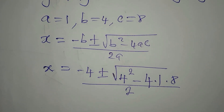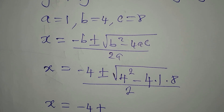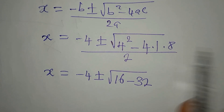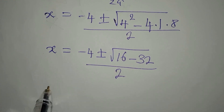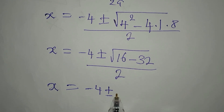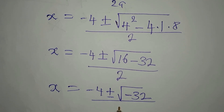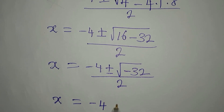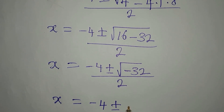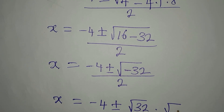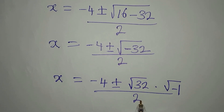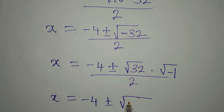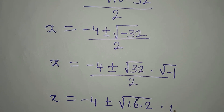So x equals negative 4 plus or minus square root of (16 minus 32), all divided by 2. Since 4 times 1 times 8 is 32, we get x equals negative 4 plus or minus square root of negative 32, divided by 2. We separate out the negative as square root of 32 times square root of negative 1, all divided by 2. Since square root of negative 1 is i, we have square root of 32 times i.